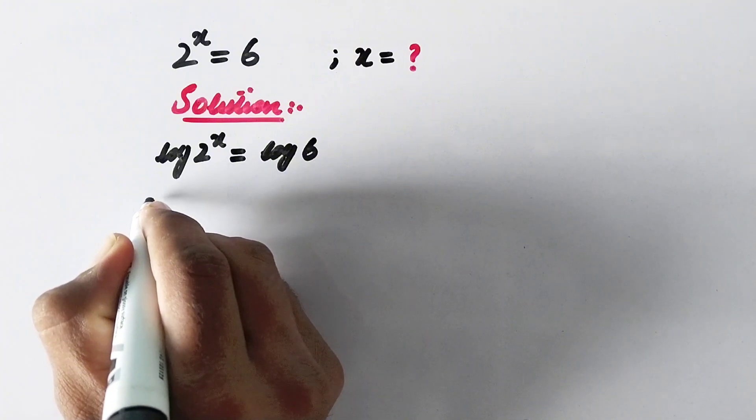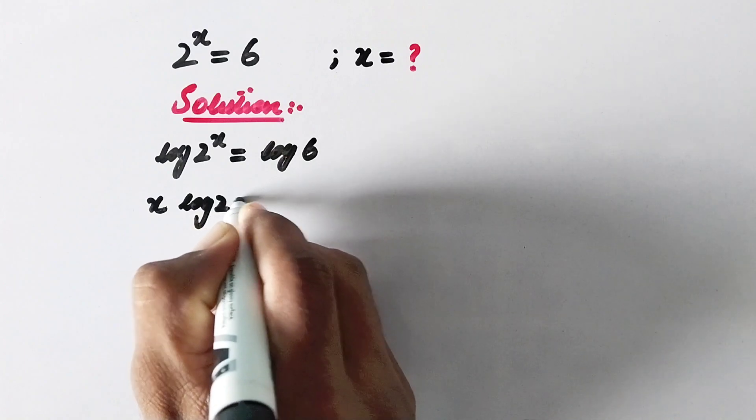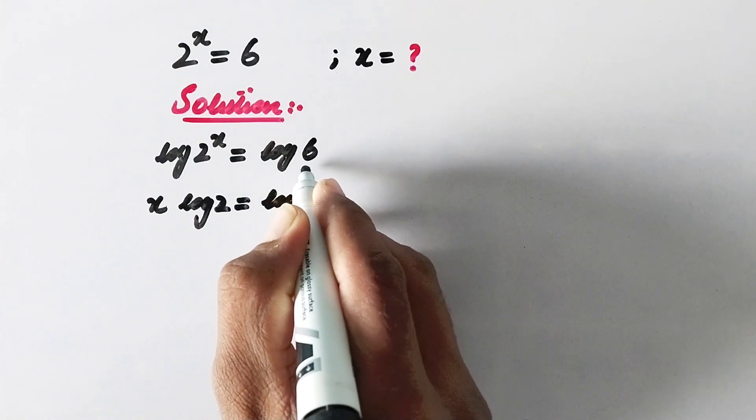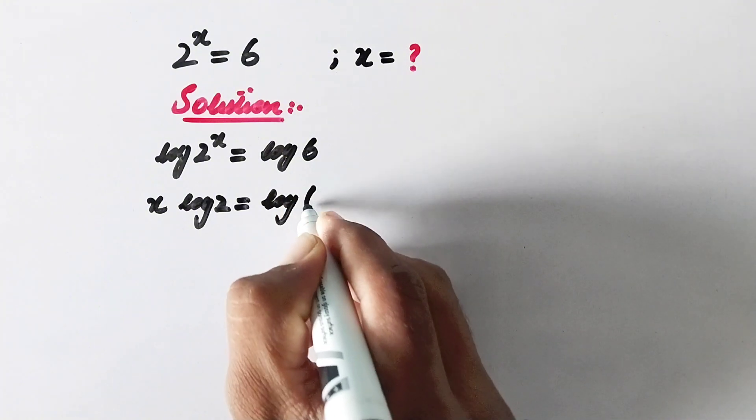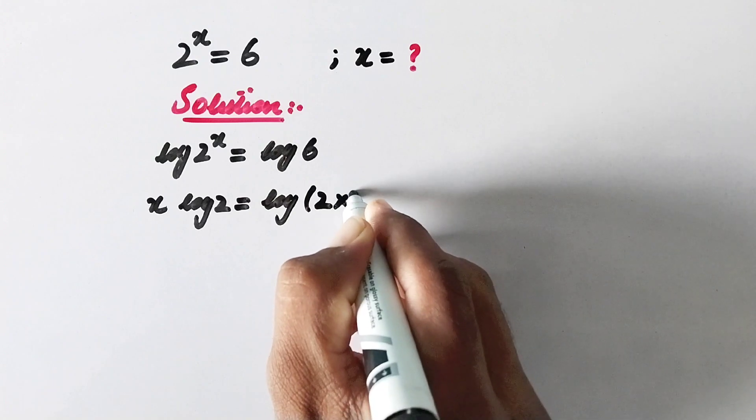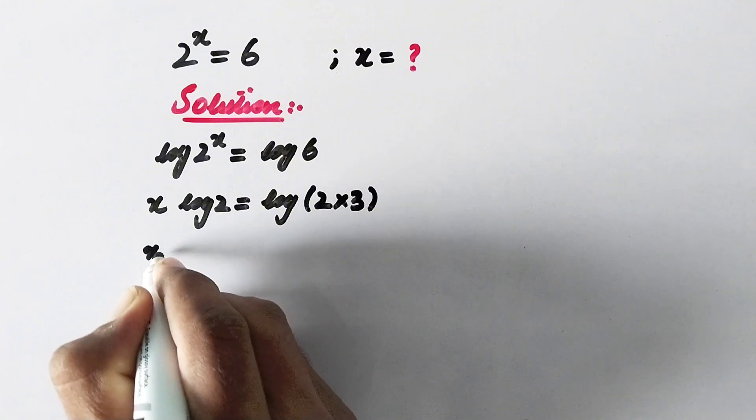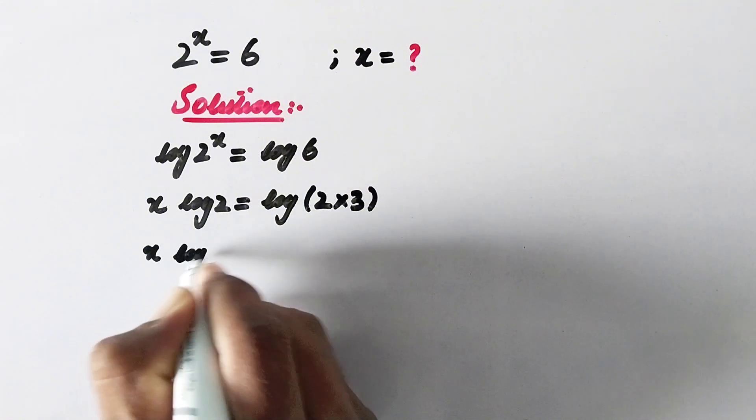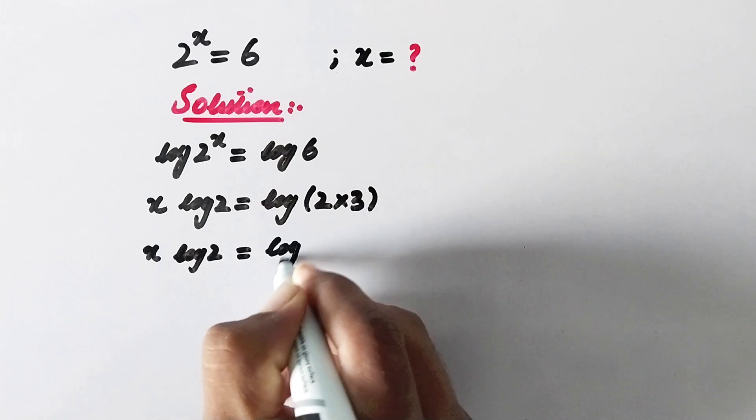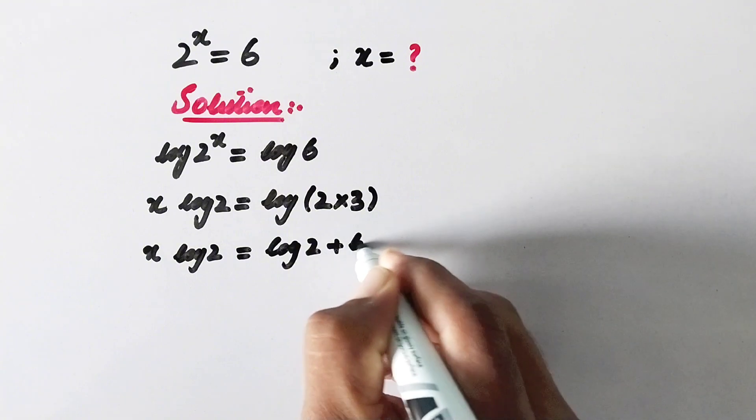So here it will be x times log of 2 is equal to log of 6, which can be expanded in this form: 2 times 3. So now we can write x times log of 2 is equal to log of 2 plus log of 3.